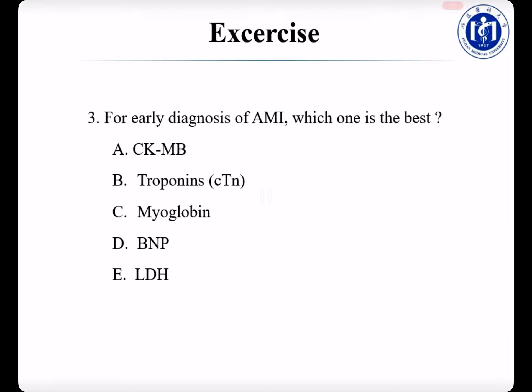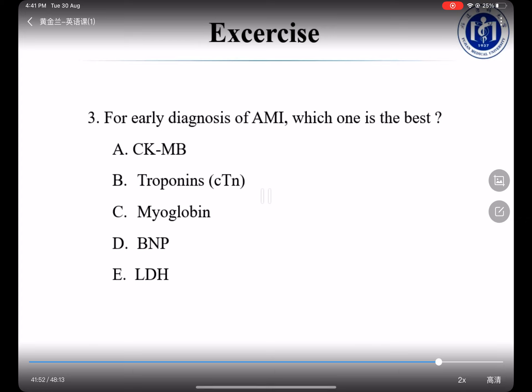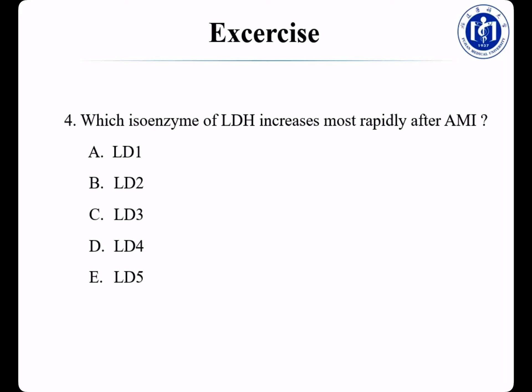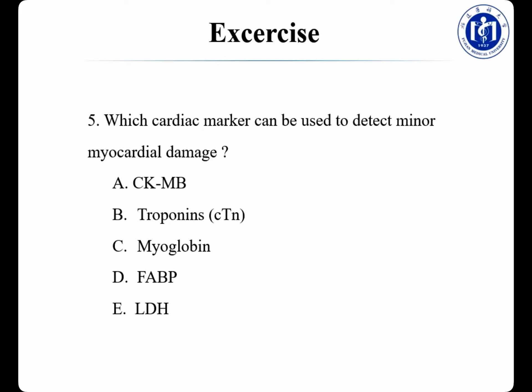Other markers — CKMB, troponin T, troponin I, and FABP — are used for the diagnosis of AMI. For definitive diagnosis of AMI, which marker is best? We can choose troponin T or CKMB, but the best one is troponin T.